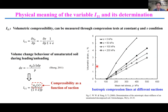The variable I1-1 in the compliance matrix is the ratio of incremental volumetric strain to incremental mean net stress when deviatoric stress q and suction s are constant. It corresponds to soil volumetric compressibility, which can be measured through compression tests at constant q and s. For example, in suction-controlled isotropic compression tests on a compacted soil, four suction levels were considered — 0, 50, 100, and 200 kPa — and I1-1 can be determined from the measured volumetric strain versus net stress relationship.